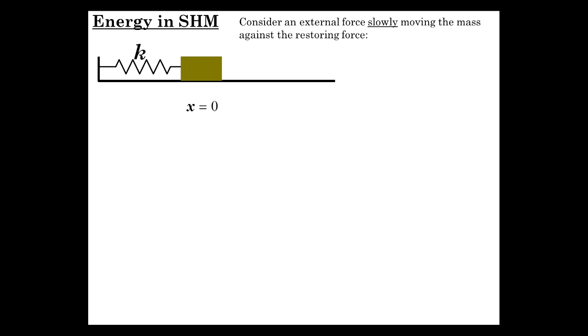Consider a spring and a mass, and we're going to put an external force on that and slowly move the mass against the restoring force. We're going to move it from x equals zero to the amplitude A. Now if we graph this, we get a linear relationship between force and x, and this is the external force. I'm applying a force in the direction that it's moving, so that's a positive relationship with positive slope to the line.